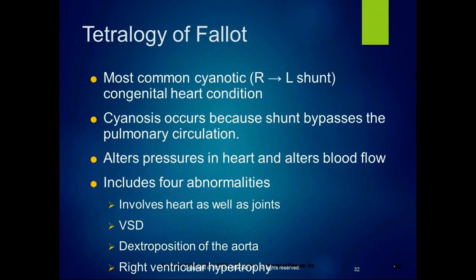The four components of the tetralogy of Fallot are: the ventricular septum problem, dextroposition of the aorta — where the aorta is on the right instead of the left — right ventricular hypertrophy, and pulmonary stenosis. It's probably pronounced 'Fallot' because it was a French cardiologist who originally characterized it, but you hear people say it both ways.